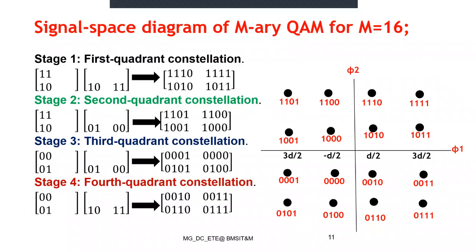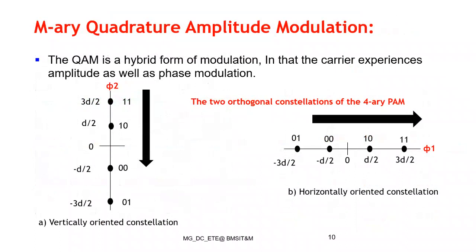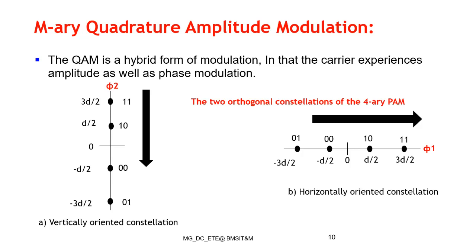To find the signal constellation diagram for QAM, I'm considering two four-array PAM modulations with orthogonal constellations — one horizontal and one vertical — each with four different symbols. Combining two four-array PAMs gives a 16-QAM signal constellation diagram. I use a top-down approach for the vertically oriented constellation and a left-to-right approach for the horizontally oriented constellation.